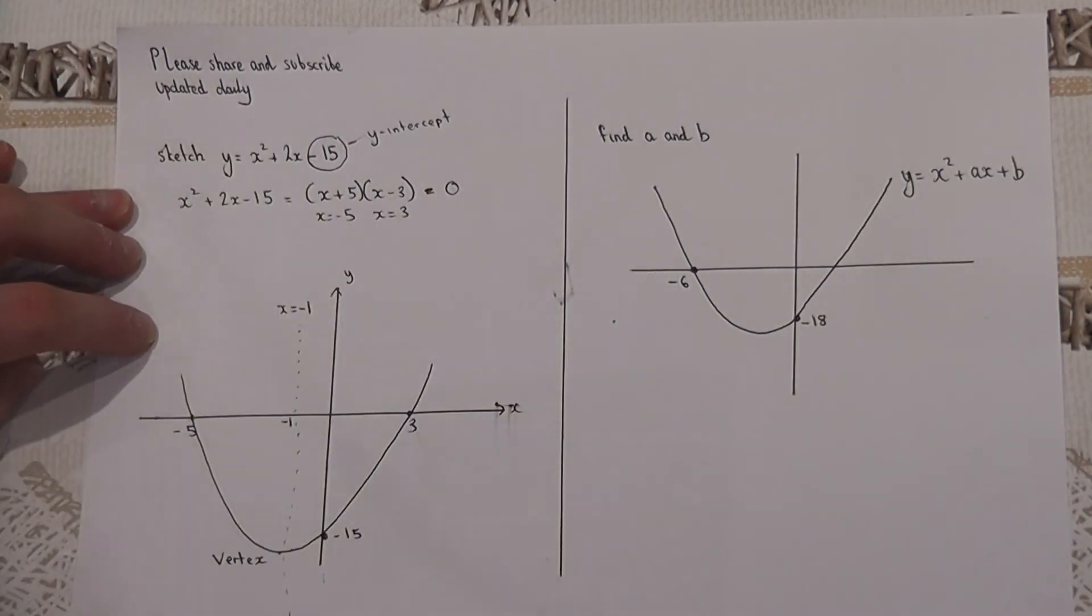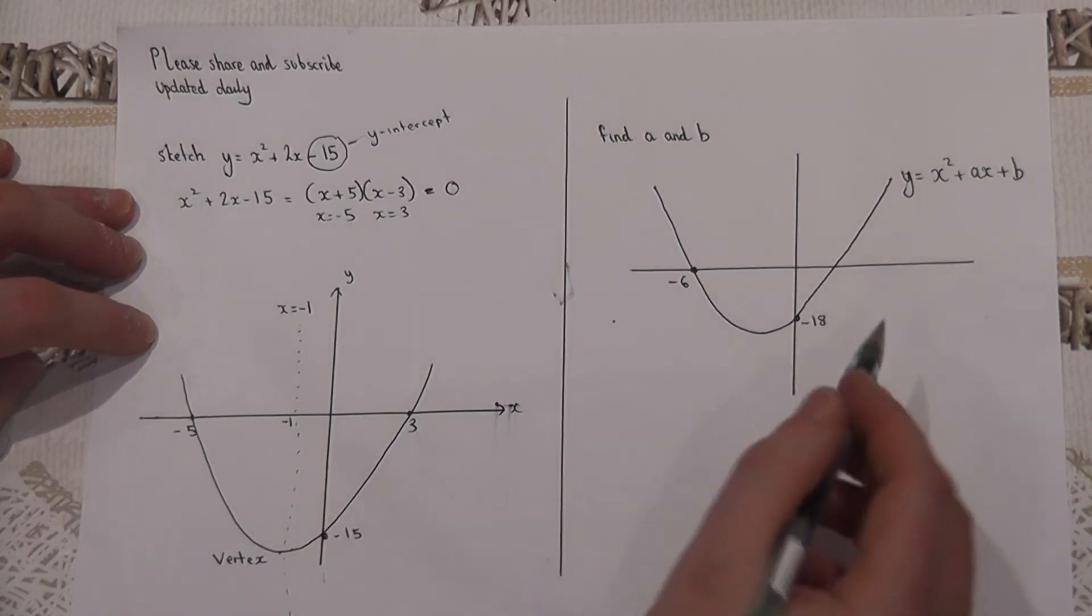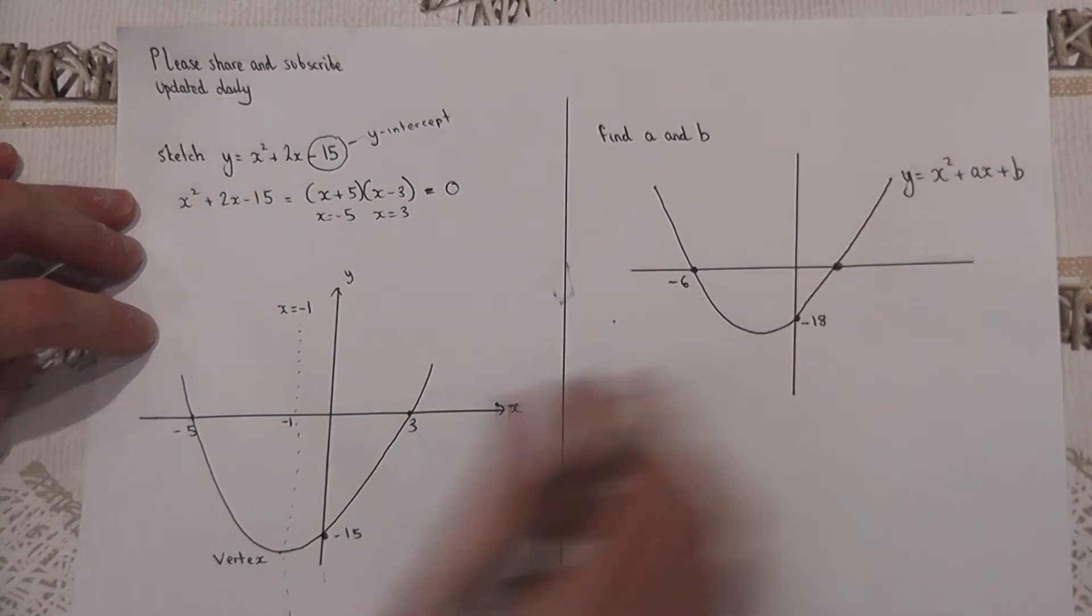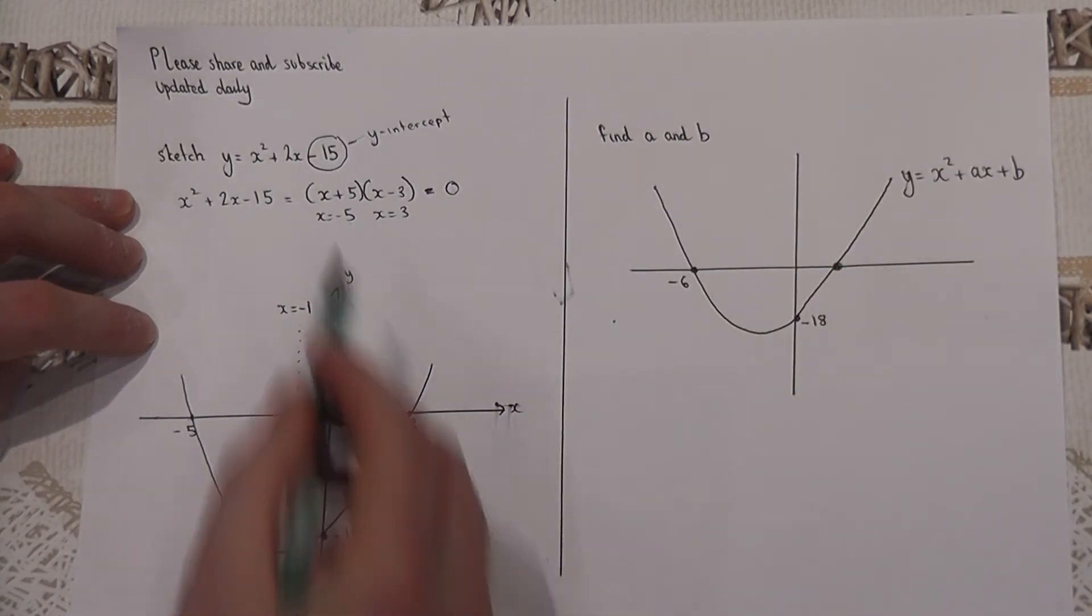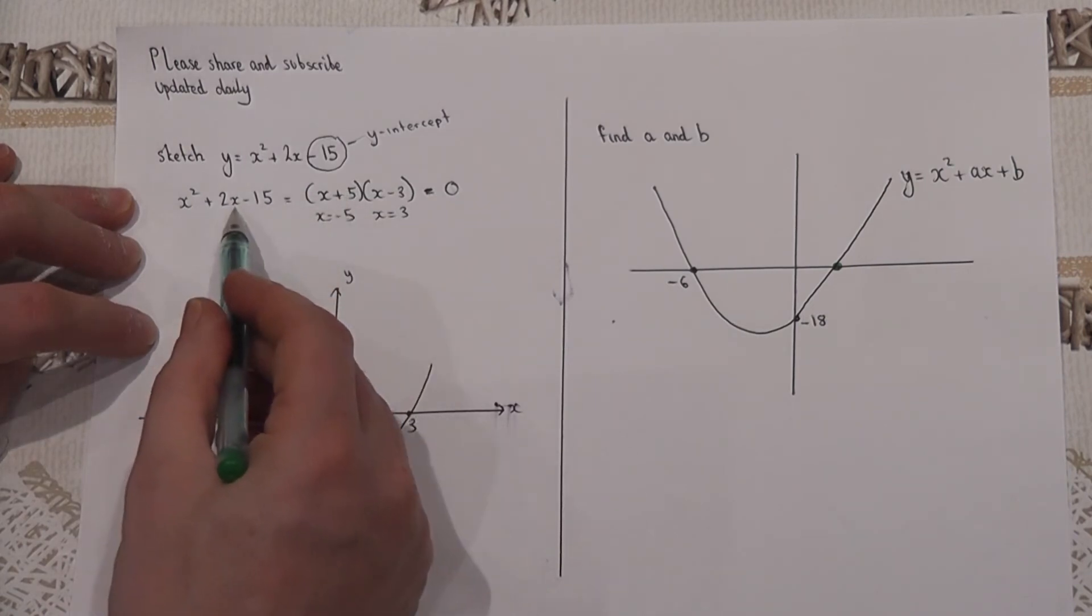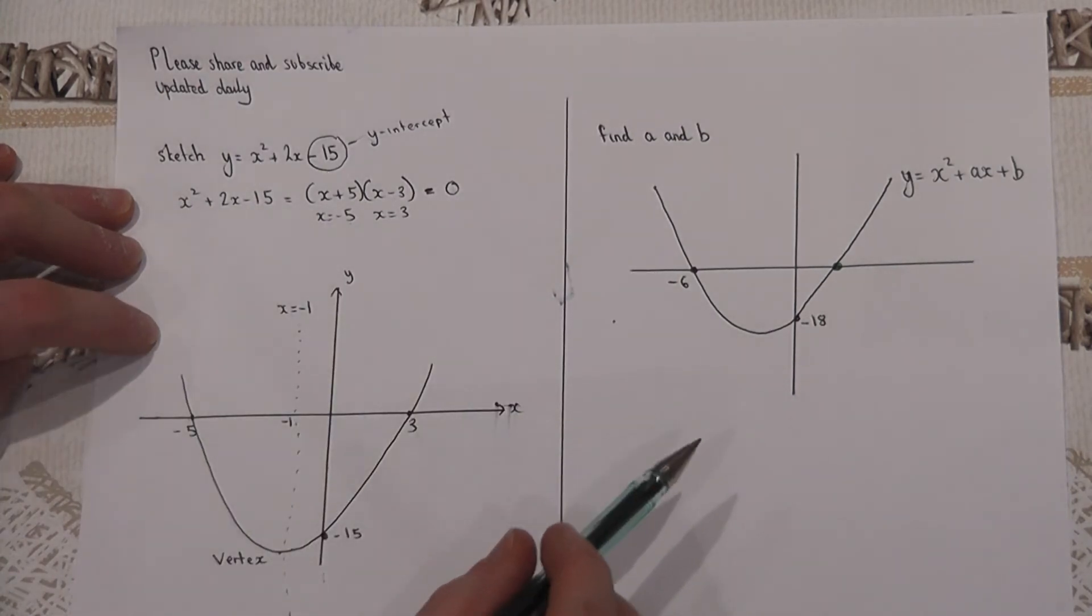Now sometimes you're asked to find the equation given the graph. We can use these ideas in reverse. Now the problem is we don't know what this other root is. If I knew the roots I can find the factors which I can expand to give the equation which tells me what a and b are. However...